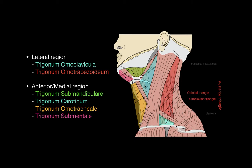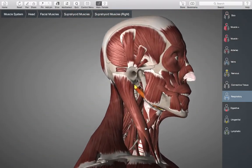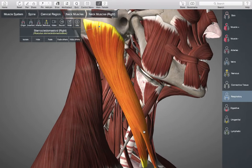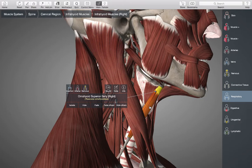And then we have the trigonum homo tracheae. If I try to show you on the 3D model — getting a lateral view — that's going to be our sternocleidomastoideus, and then we have the superior belly of the omo hyoid and the midline. Those three together are going to form the trigonum homo tracheae, and here is your trachea right here.